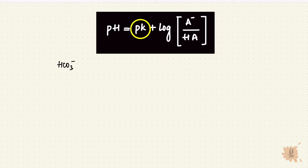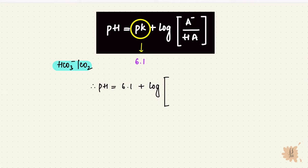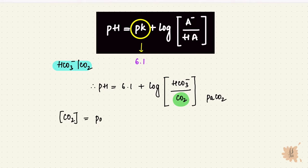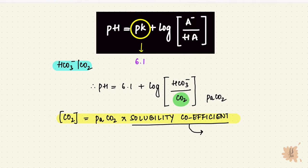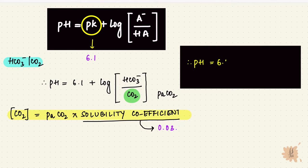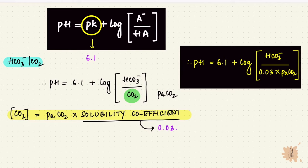For the bicarb–carbon dioxide buffer pair, the pK is 6.1. So the pH equals 6.1 plus log of bicarb over carbon dioxide. We measure carbon dioxide as a partial pressure, so the concentration equals partial pressure times the solubility coefficient. For carbon dioxide, the solubility coefficient is 0.03, making the equation: pH equals 6.1 plus log of bicarb over 0.03 times the partial pressure of carbon dioxide. This is the formula to remember. This bicarb–carbon dioxide buffer pair is most effective within one unit change of pH.